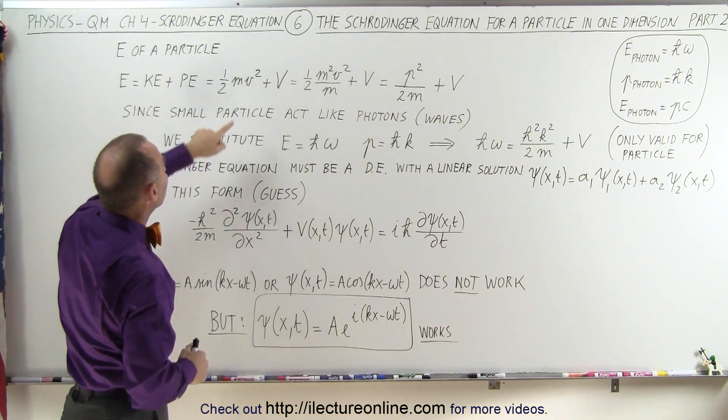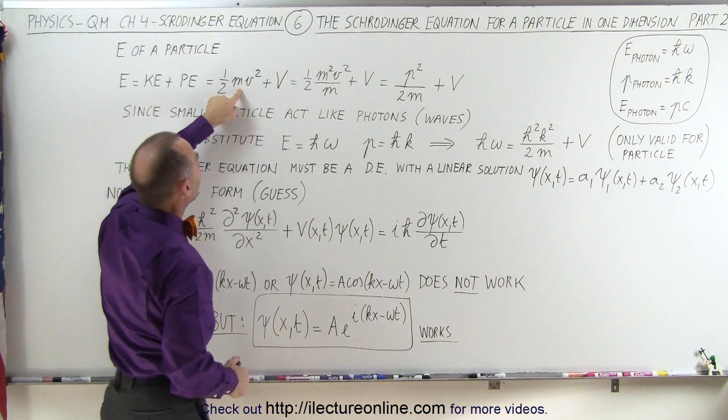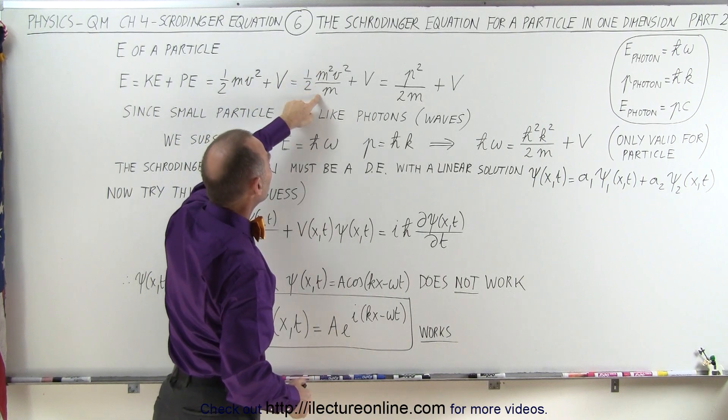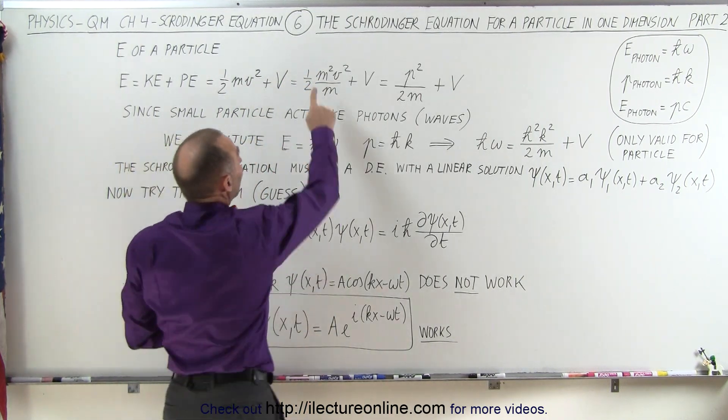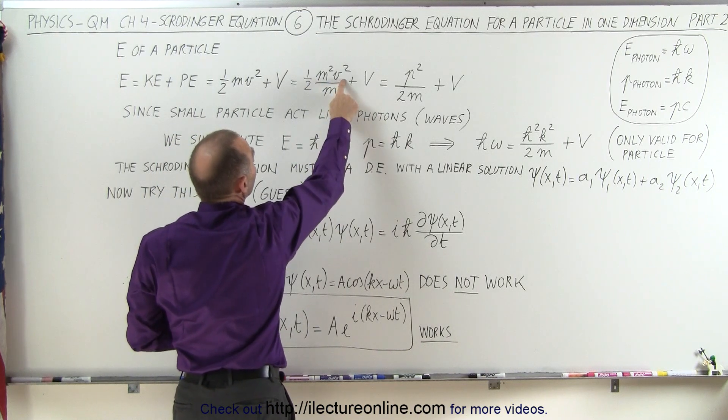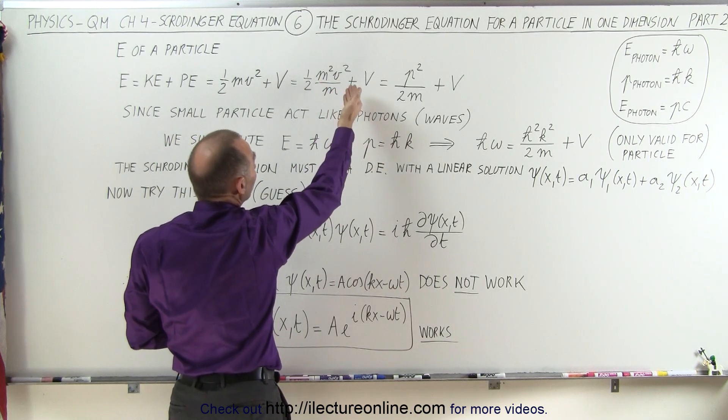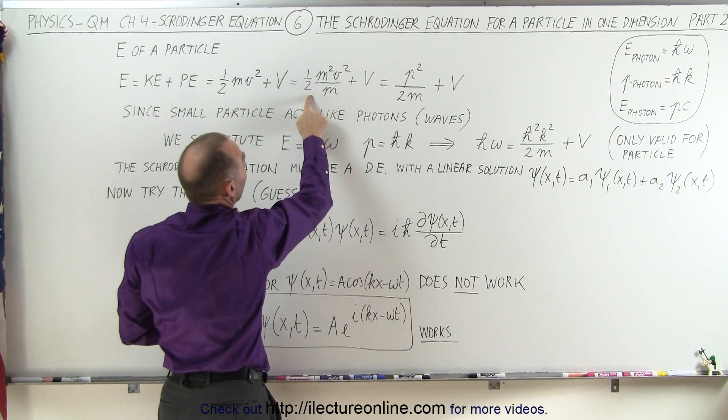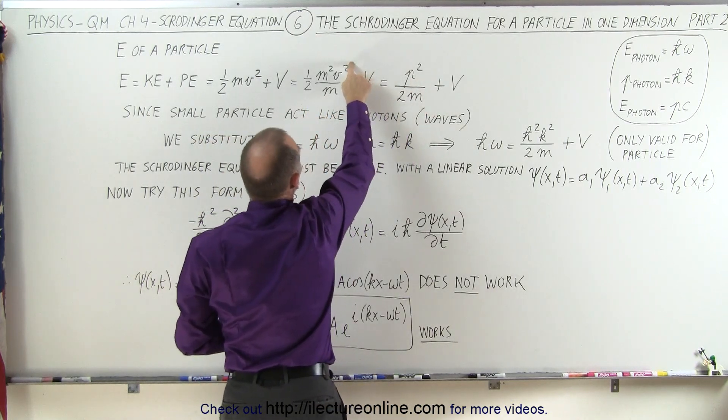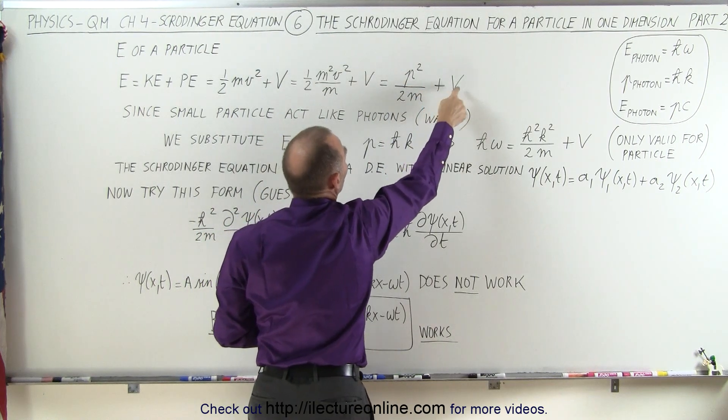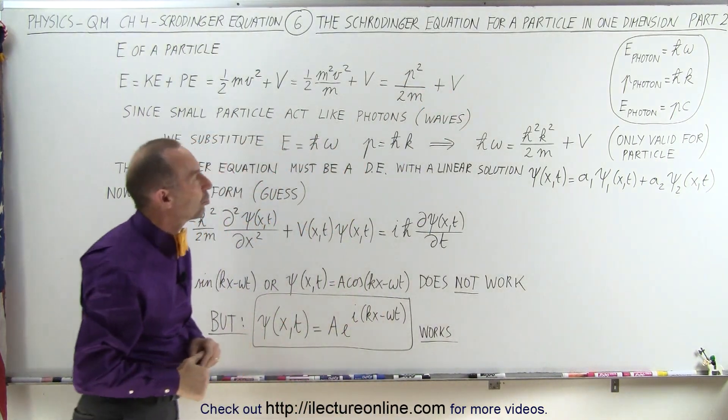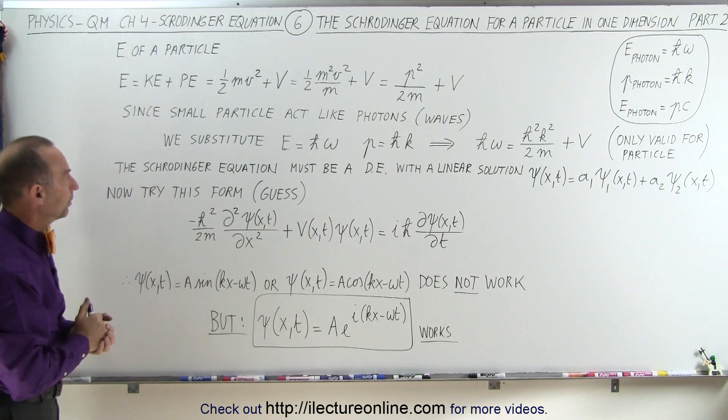What we can do is multiply the numerator by m and divide the numerator by m. The reason why we do that is then in the numerator, we get m times v quantity squared, and m times v is the momentum. So this can now be written as the momentum squared divided by 2 times m. This would be the kinetic energy of the particle plus the potential energy of the particle.